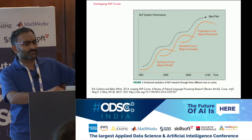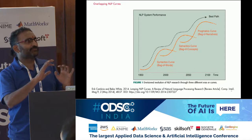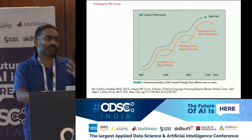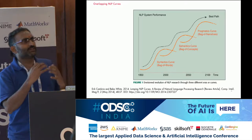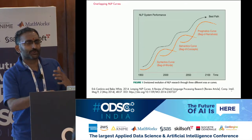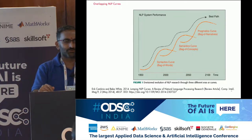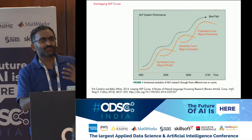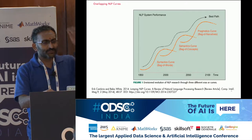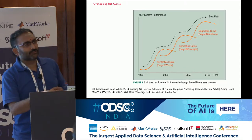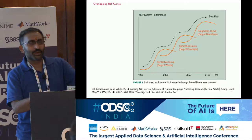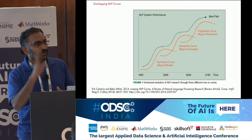The syntactic curve is when you are looking at text only as a bag of characters or a bag of words. In the semantic curve, you start looking at it in terms of bag of concepts and understand the basic meaning of the text. In the pragmatics curve, the representation changes into narrative-based representations. We are not yet there — the pragmatics curve is more of a futuristic thing. We are somewhere in the middle of the semantics curve, though there have been advances with Siri, Google, and others.